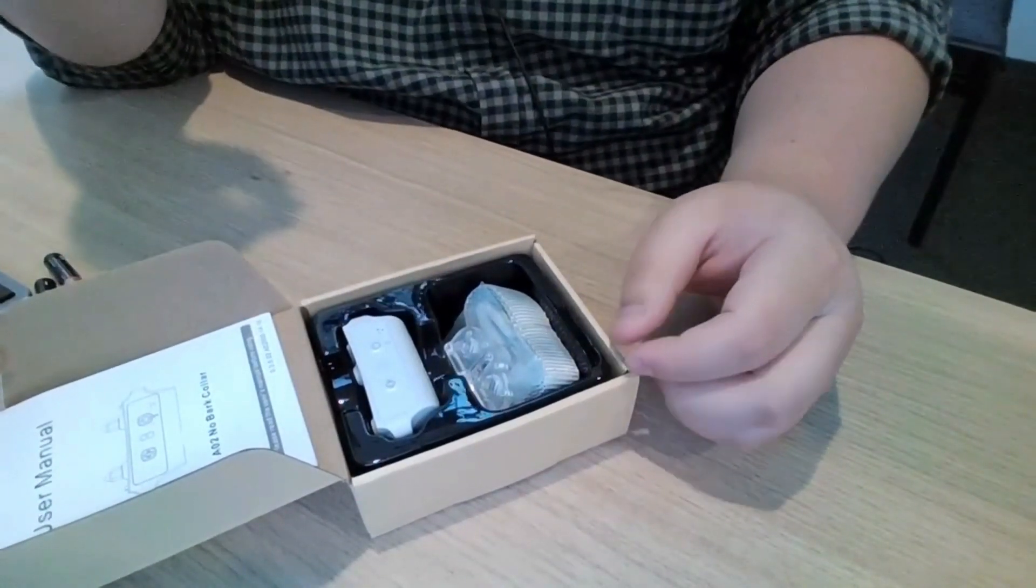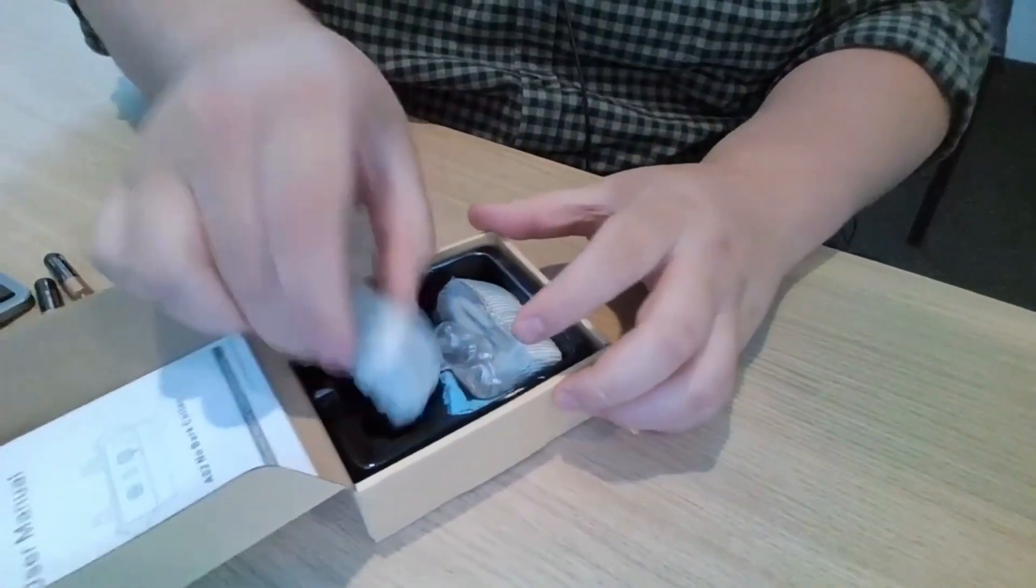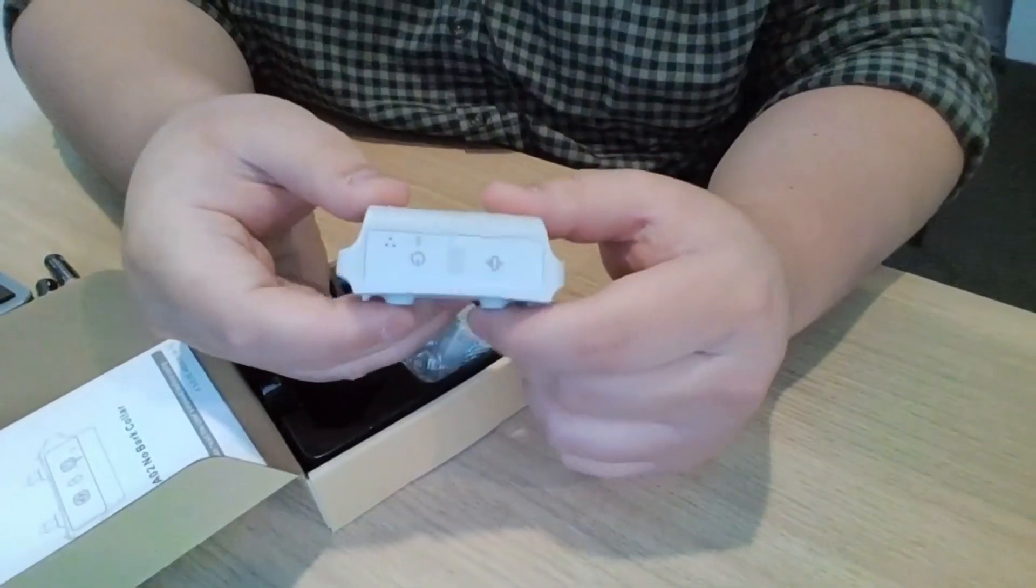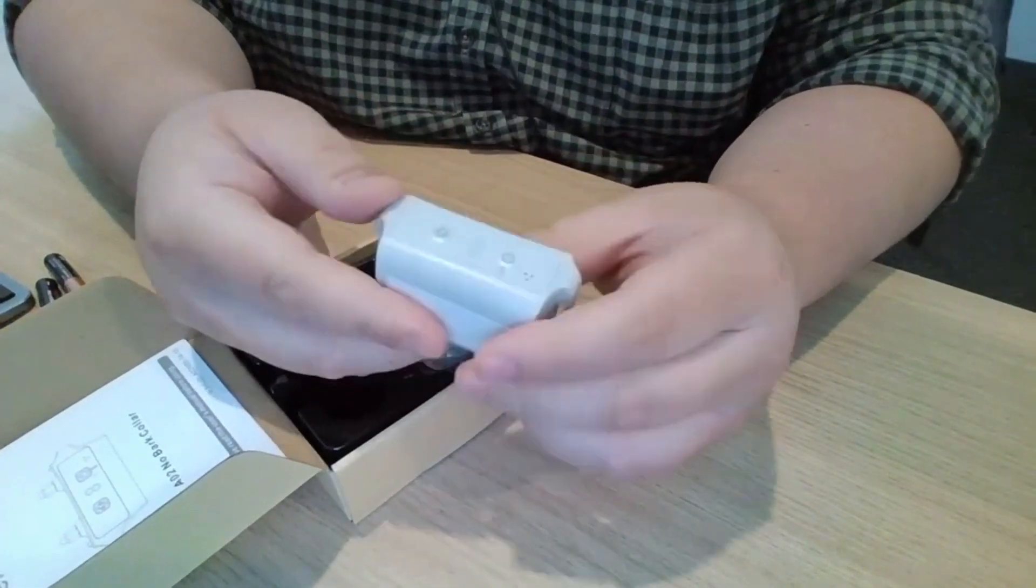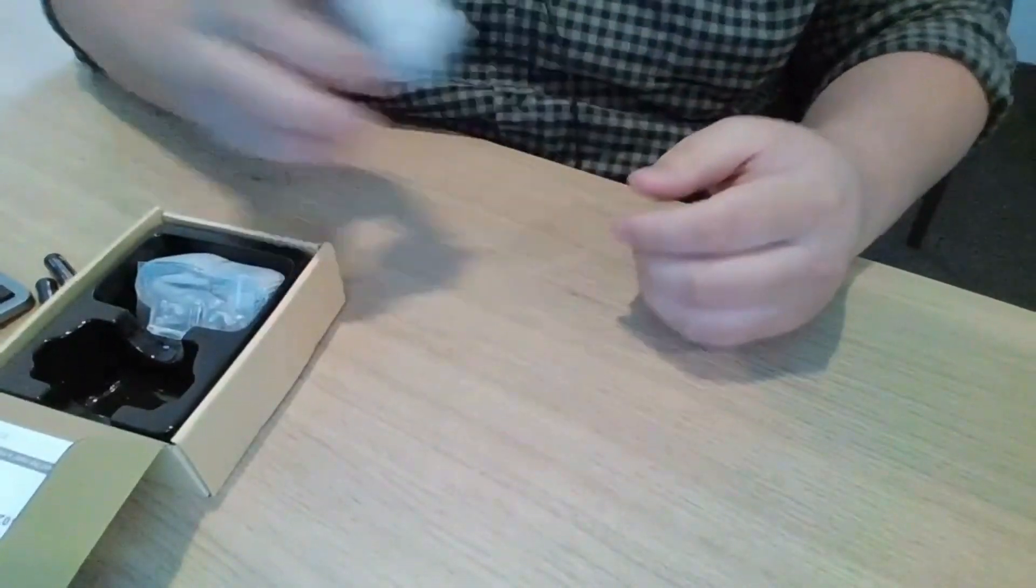This is now going to be the second model that we have, which is the A02 bark collar, which is vibration only. These particular units don't actually come with any type of static built into them, and they do have eight levels of vibration. I'm just going to quickly take you guys through the actual setup of the device itself.